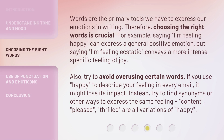Words are the primary tools we have to express our emotions in writing, so choosing the right words is crucial. For example, saying "I'm feeling happy" can express a general positive emotion, but saying "I'm feeling ecstatic" conveys a more intense, specific feeling of joy. Also, try to avoid overusing certain words. If you use "happy" to describe your feeling in every email, it might lose its impact.